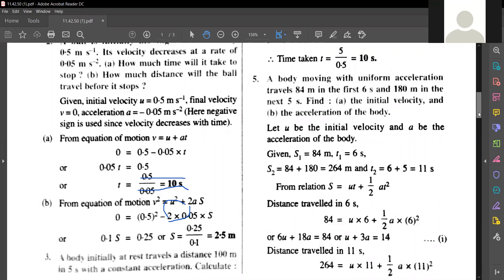One is I can use s equals to ut plus half at squared. I got the value of a, I got the value of time, I got the value of u also. Or I can use the formula v squared equals to u squared plus 2as because velocity is known to us, final velocity is known to us, acceleration is known to us, u is known to us.